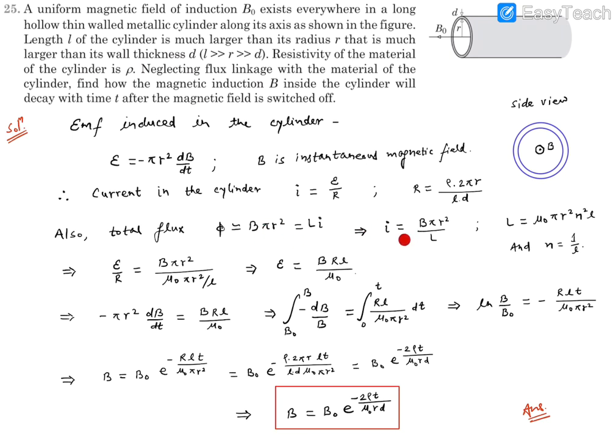From here we can write I = Bπr²/L. L is the self-inductance. For this, it's just like a solenoid, so self-inductance is μ₀πr²n²L, where n is the number of turns per unit length. Here we can think there's only one turn because it's not a wire - the entire conductor behaves like a single wire, so n = 1/L.